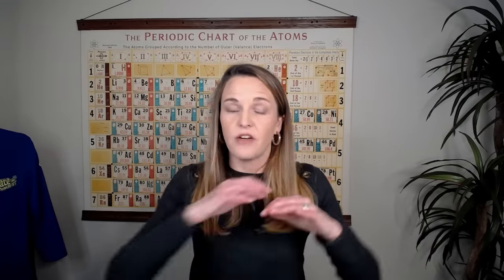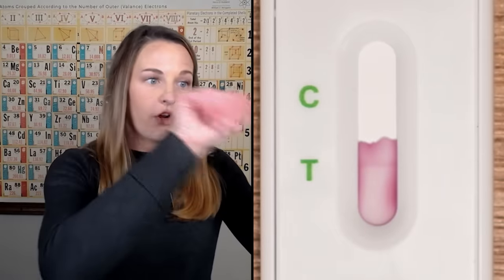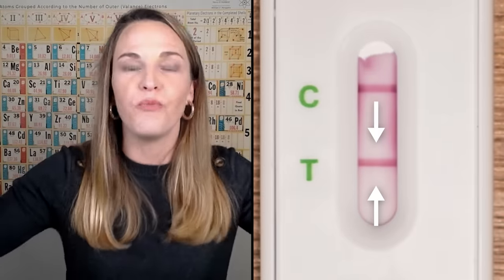And so if gold nanoparticle plus antibody one plus COVID virus goes up to that T level, antibody two now reaches out and grabs onto that COVID virus and locks it into place. So you've got gold, antibody one, COVID, and then antibody two stuck on that T line. And now boom, you've got a color change.